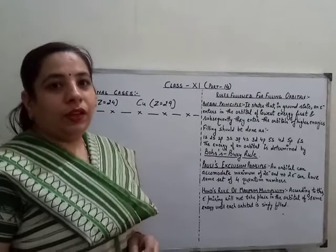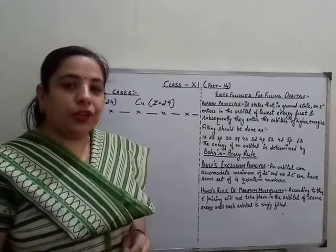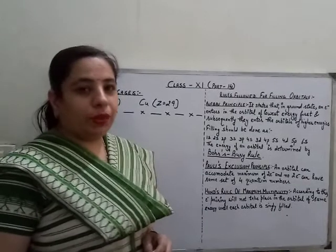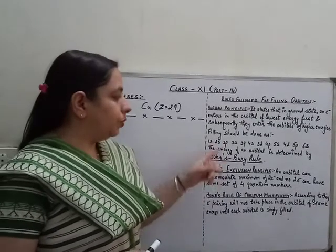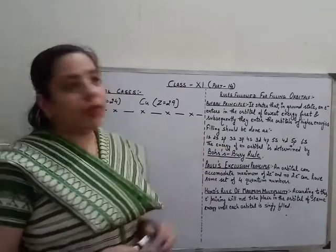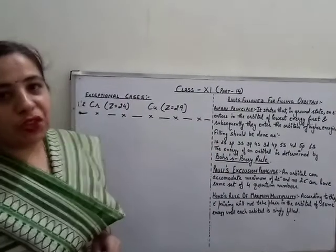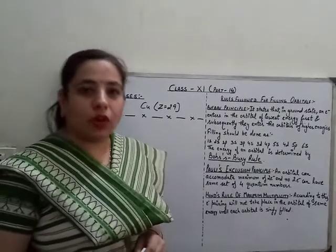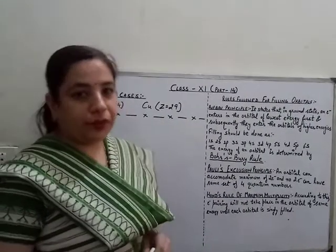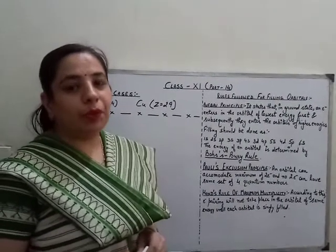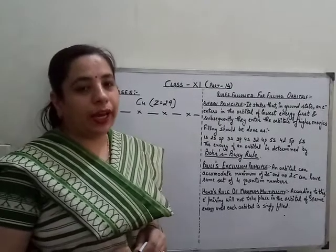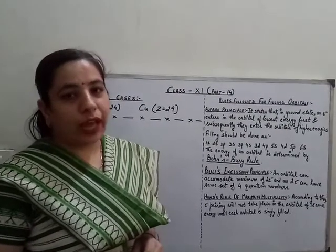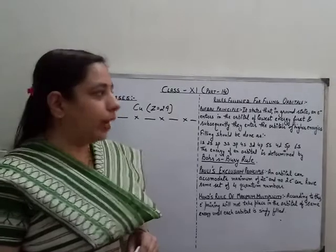Hello everyone. In the last videos we have discussed quantum numbers and Bohr's Bury rule. Quantum numbers is a set of four numbers which help us to get the information of an electron inside an atom. And Bohr's Bury rule helps us to arrange the orbitals in the increasing order of their energies for the filling of electrons.